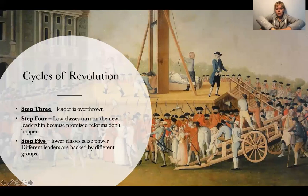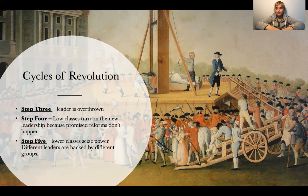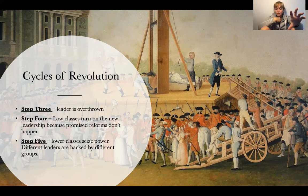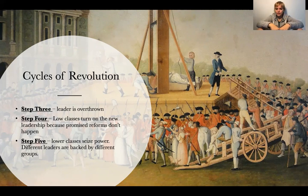Step 3: The upper-middle and upper classes team up with the lower classes and work together to overthrow the leader. In France, they execute King Louis XVI — his head is chopped off. In America, even though King George doesn't lose his head, he is effectively overthrown. The upper classes of the Americas team up with the lower classes, promise 'no taxation without representation,' and overthrow King George, who can't really do anything about it from across an ocean.